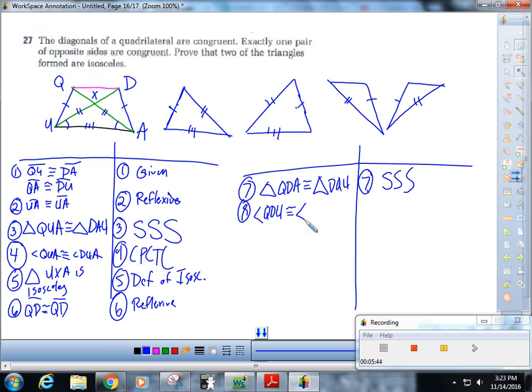And now I've got triangle QXD is isosceles by definition of isosceles. BOOM!